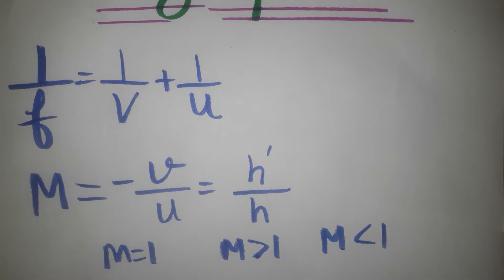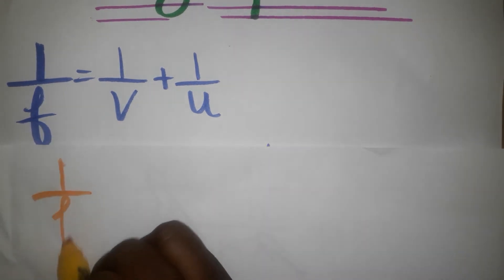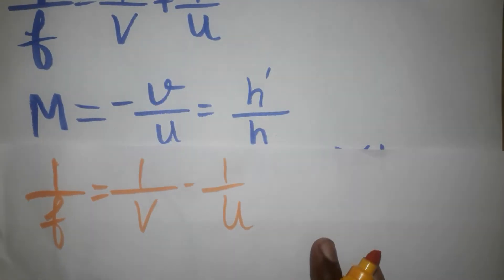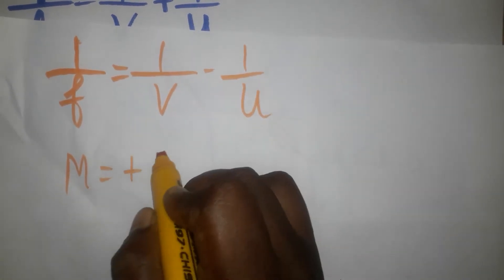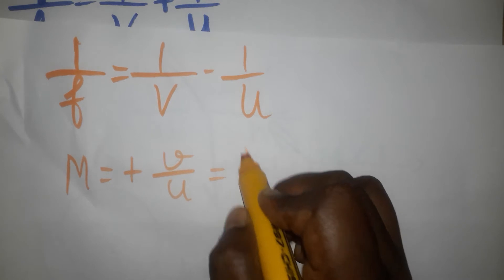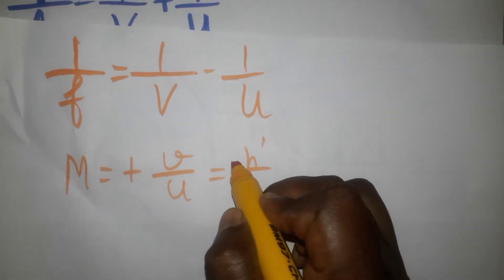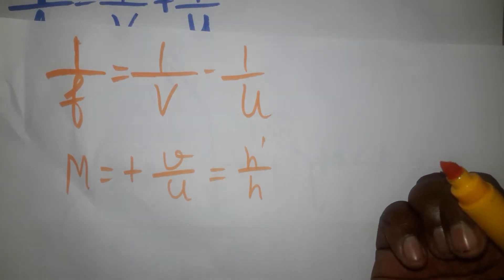Next is the lens formula. Here you will notice a negative sign: 1/f = 1/v − 1/u. The magnification of a lens is +v/u, or h'/h. A convex lens produces an inverted image, while a concave lens produces an upright image — all based on sign convention.